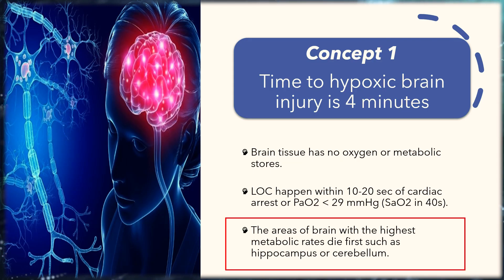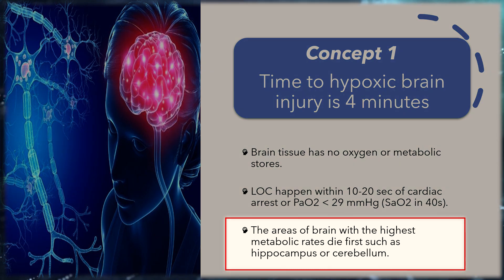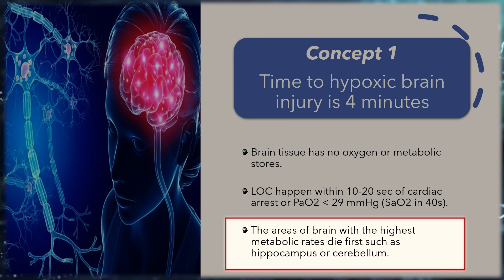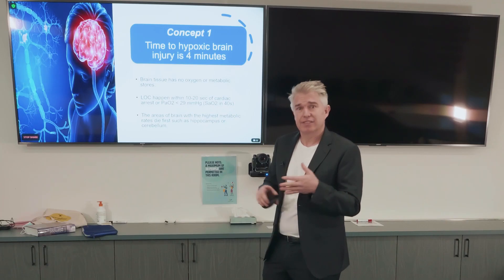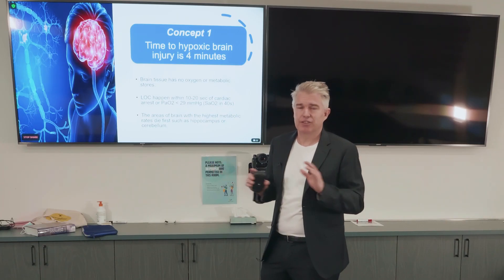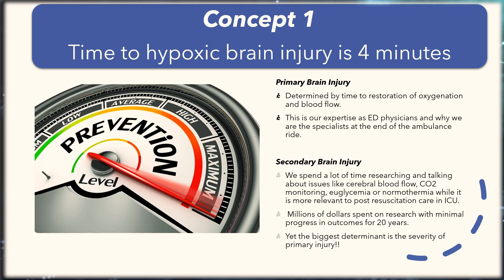The areas of brain that die first are those with the highest metabolic rate — universally first the hippocampus, followed by the cerebellum and basal ganglia, then the occipital lobes, then other parts of the brain. It is so predictable. The time to hypoxic brain injury is four minutes, but let's talk about primary and secondary brain injury.